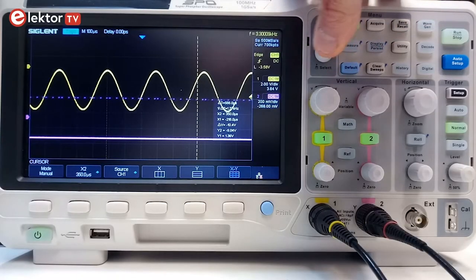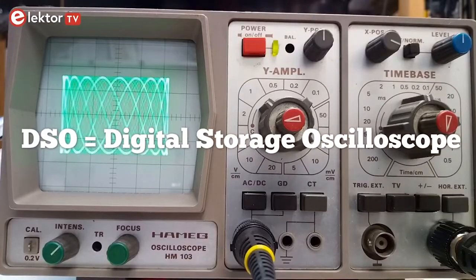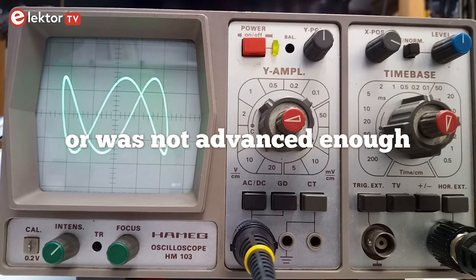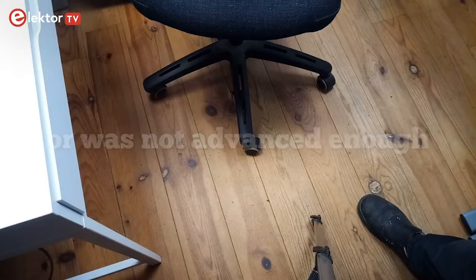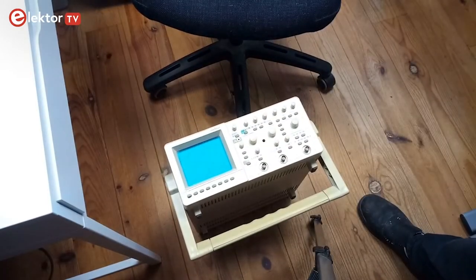Today, oscilloscopes are 100% digital and they are called DSOs. Oscilloscopes used to be 100% analog in the past, because digital technology did not exist yet. Analog oscilloscopes are bulky and limited, and you don't want one unless you have very special needs.